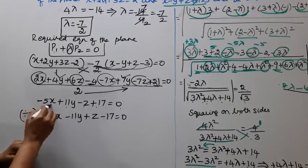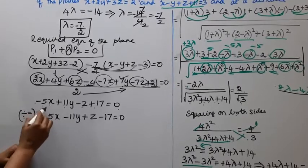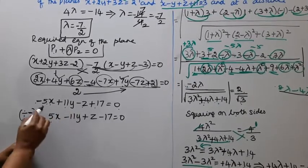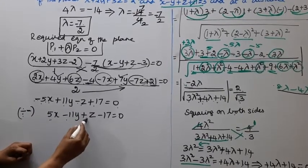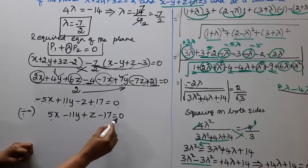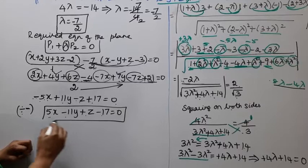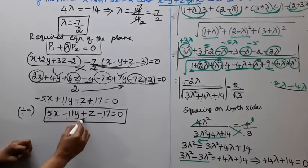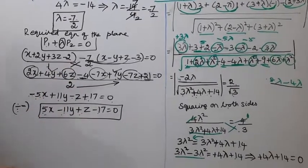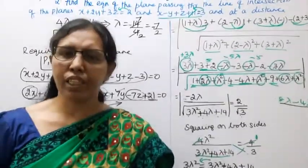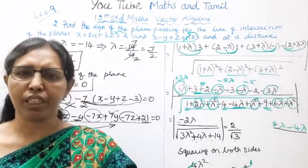Multiplying through by minus 1: 5x minus 11y plus z minus 17 equal to 0. This is the required equation of the plane. Please subscribe to the channel and click the bell button.